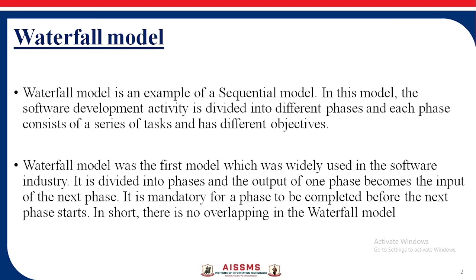The waterfall model is an example of a sequential model. The activities of software development are divided into different phases, and each phase consists of a series of tasks and has different objectives. The waterfall model was the first model widely used in the industry. The output of each phase is given as input to the next phase, and it is mandatory for a phase to be completed before the next phase starts. In short, there is no overlapping in the waterfall model.